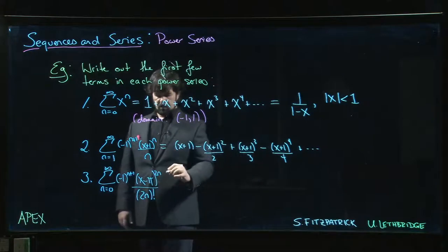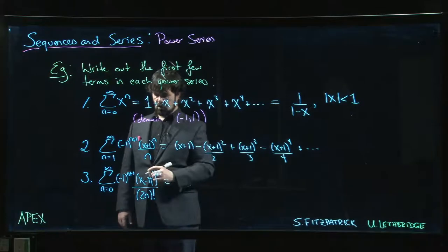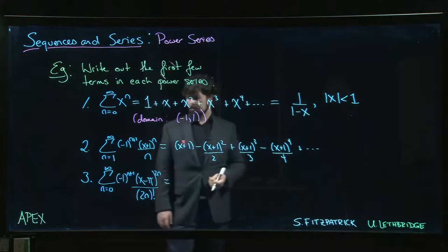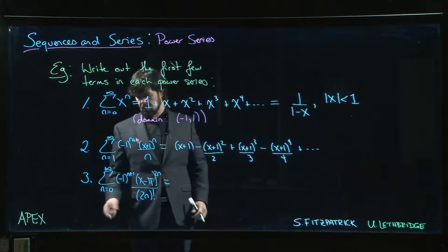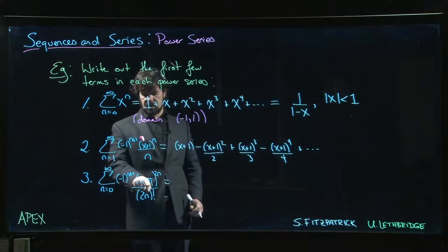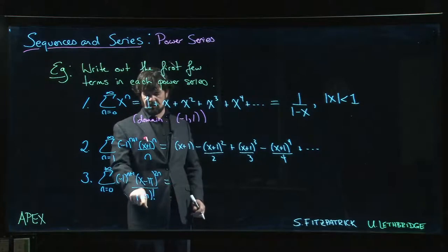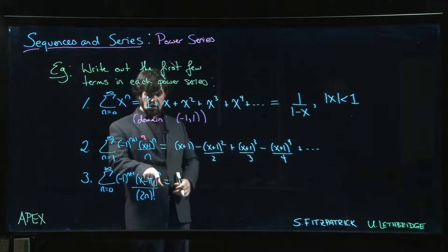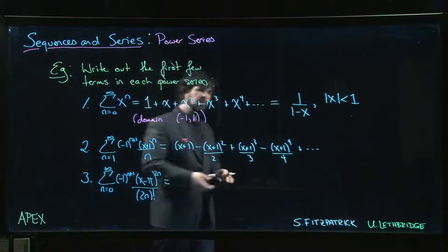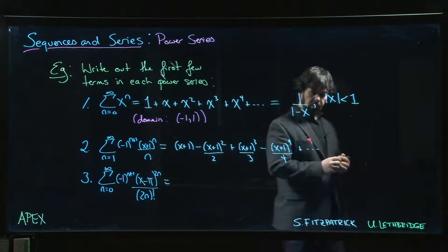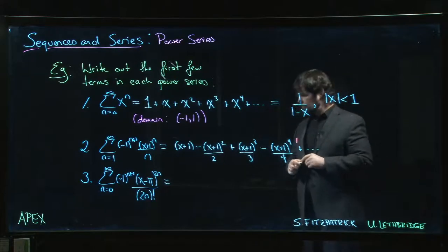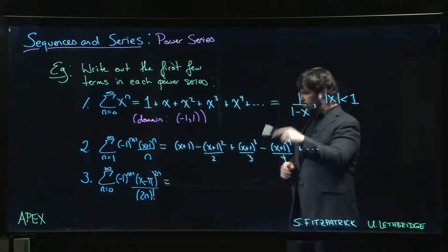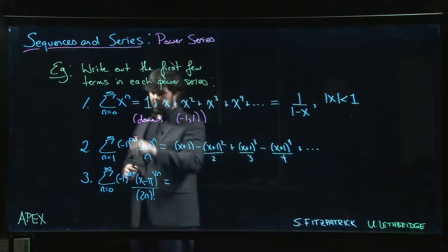Down to the last one. Looks a little bit more complicated, but it really isn't. We're going to start at n equal to zero. We've got a sign factor again. We've got our powers of x. This time we've got a factorial, so we've got to account for that. Notice the 2n. It means we only have even powers of x showing up in this particular power series.